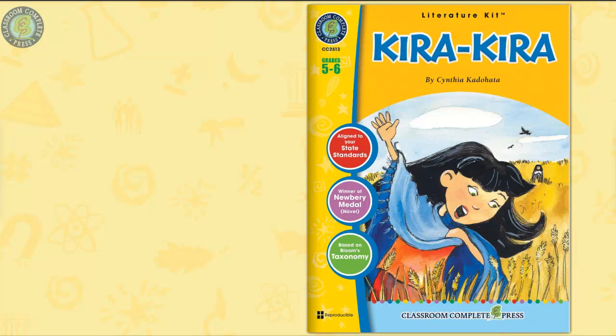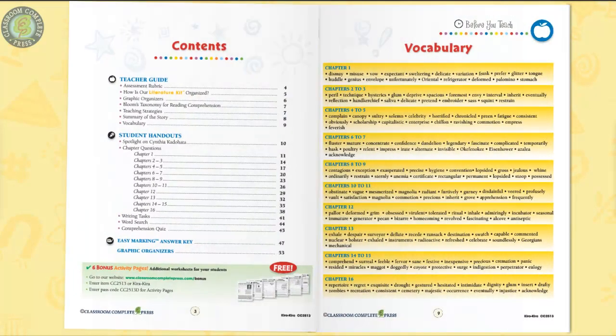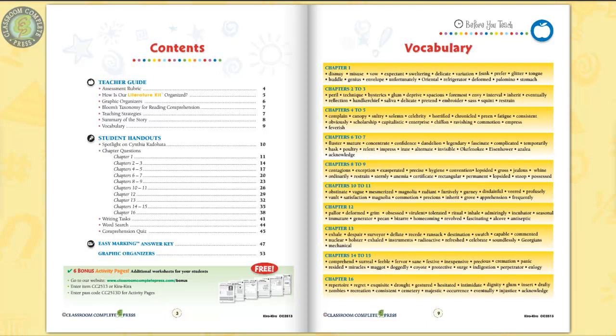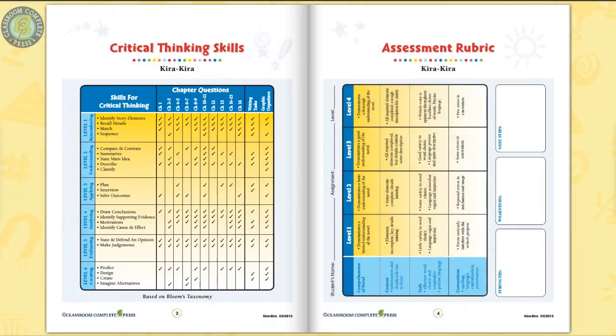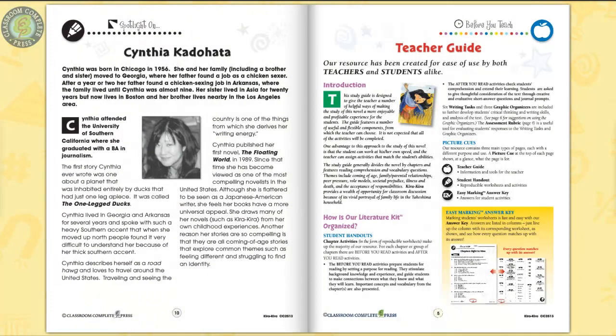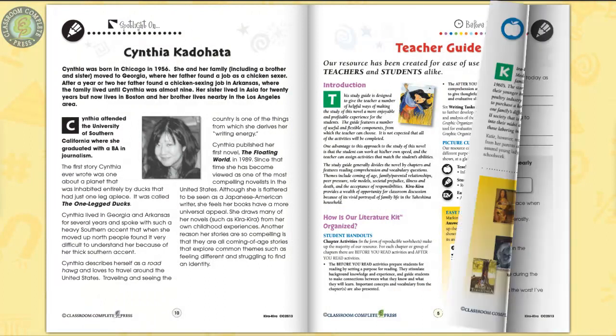This literature kit on Kira-Kira by Cynthia Kadohata guides students through the novel with vocabulary prompts and comprehension activities. Fifty-five pages chocked full of a variety of scaffolding strategies incorporated in our Before You Read worksheets for each chapter section, along with vocabulary prompts to prepare your students for the reading, with rubrics, teacher guide, and author biography.